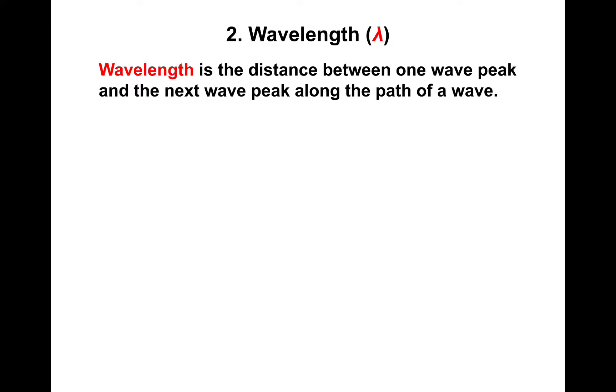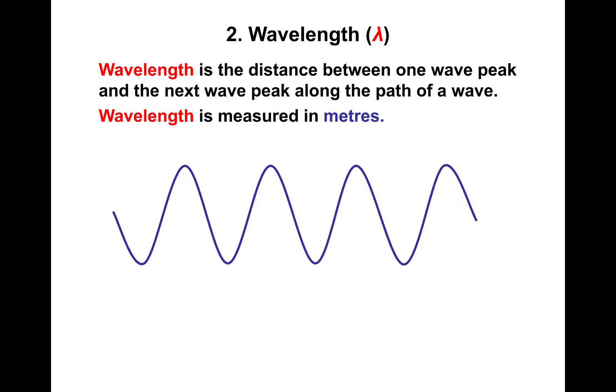So what about wavelength? Wavelength is the distance between one wave peak and the next wave peak along the path of a wave. Wavelength is measured in meters. So that would be wavelength from peak all the way down to the bottom and all the way back to the starting position. That is the length of one wave.